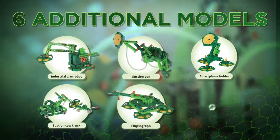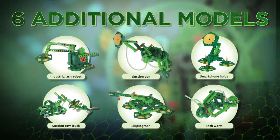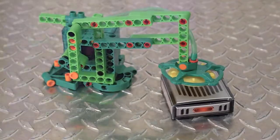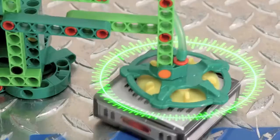With six additional mechanical models, you can build even more. Construct an H-worm that really crawls and an industrial robotic arm that can lift using a vacuum suction cup gripper.